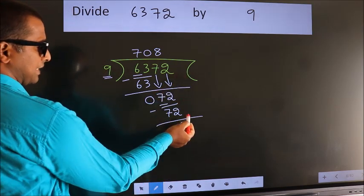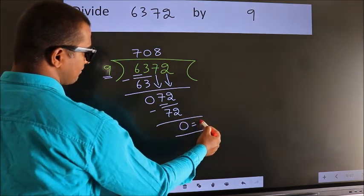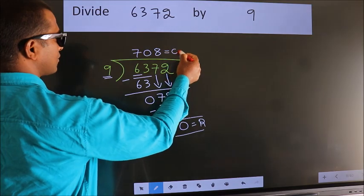No more numbers to bring it down. So, we stop here. This is our remainder. This is our quotient.